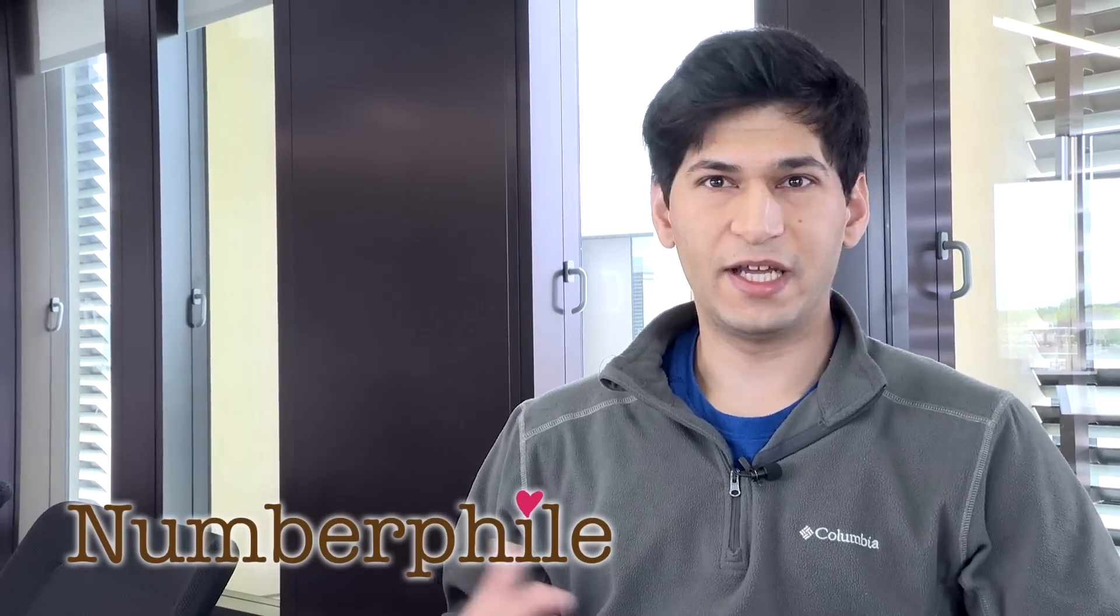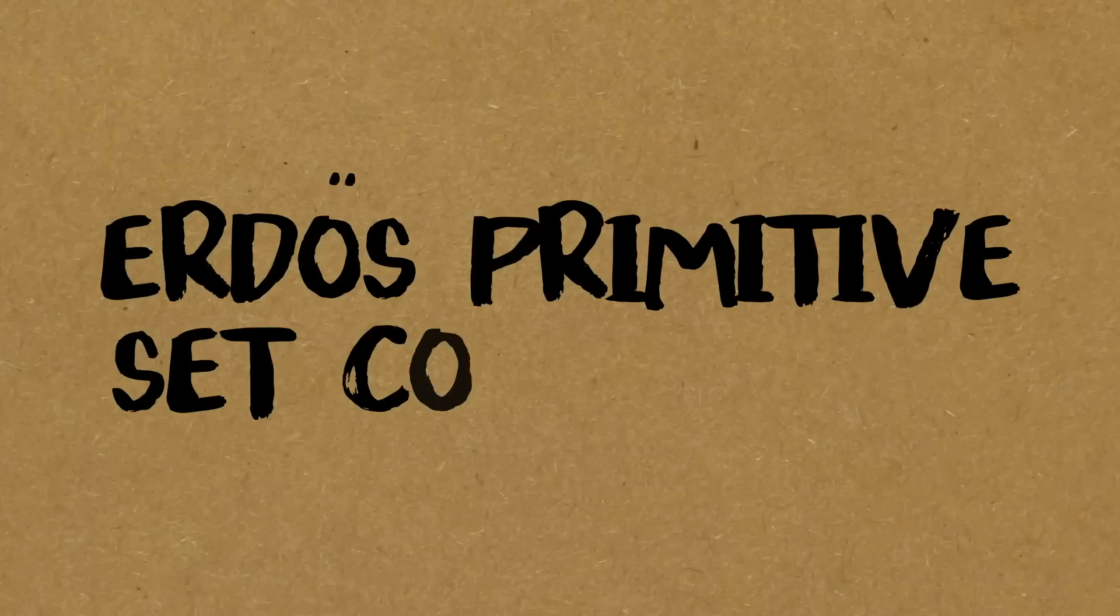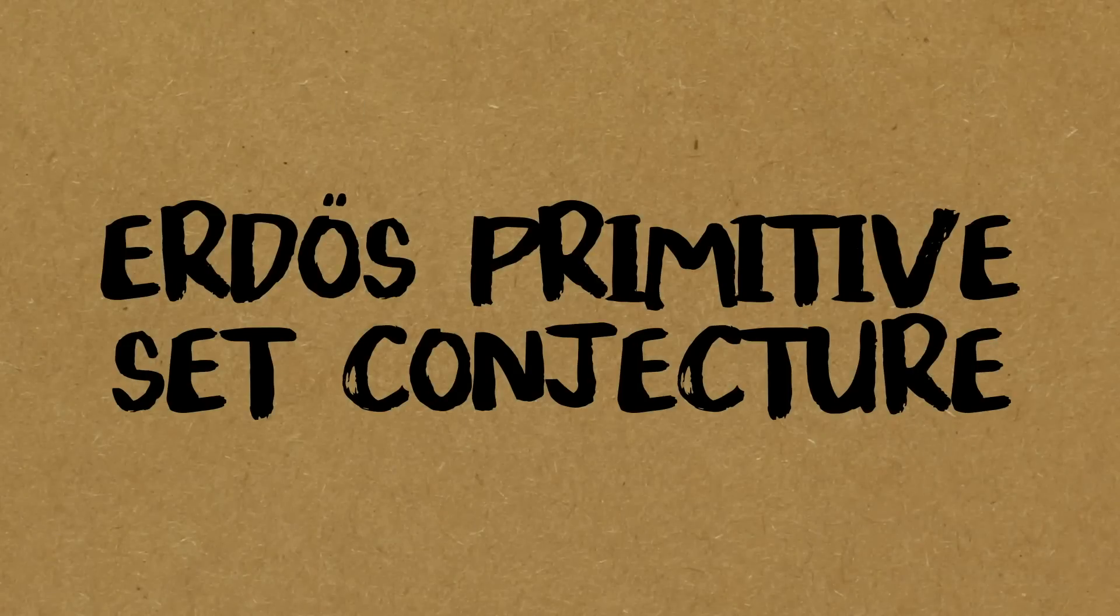There's this conjecture due to Paul Erdős, one of the great mathematicians of the 20th century. He's interested in the prime numbers and posed a very beautiful conjecture to do with primitive sets. This conjecture is now a full theorem. Why is it a full theorem? It's because of you! Yeah, I recently proved it.